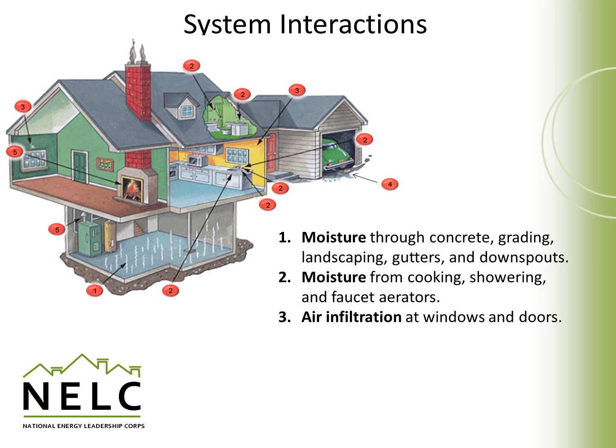Air infiltration can take place at windows and doors — this is a case where cold air from the outside gets inside and adds to our heating load. Garages are important because they can be a source of carbon monoxide. Our cars emit carbon monoxide when they're running, and we need to take steps to make sure that no harmful carbon monoxide is introduced to the home.